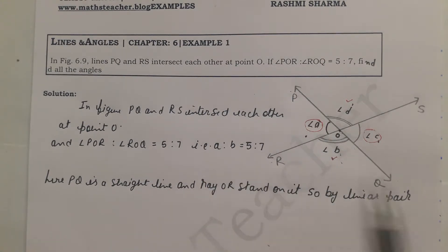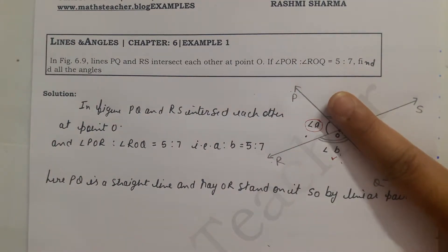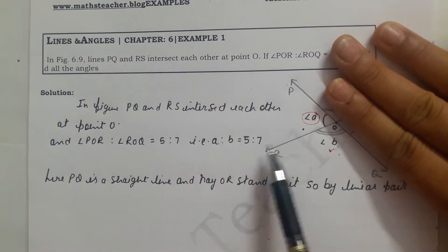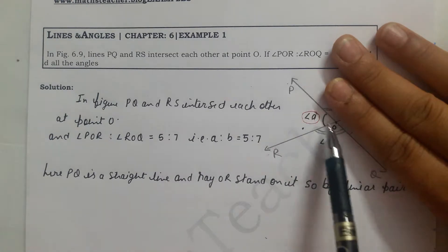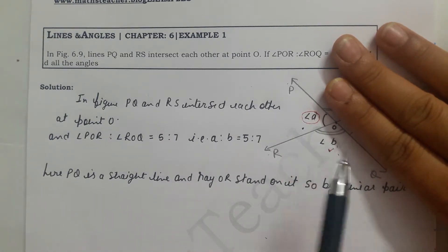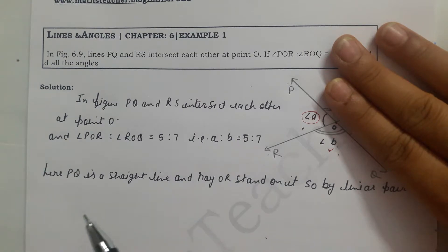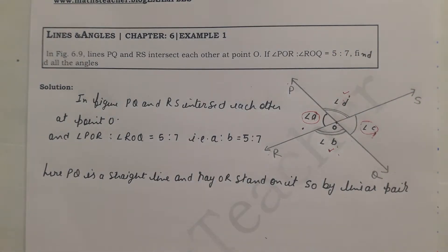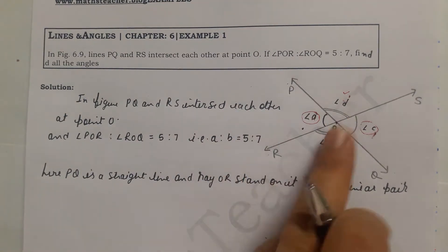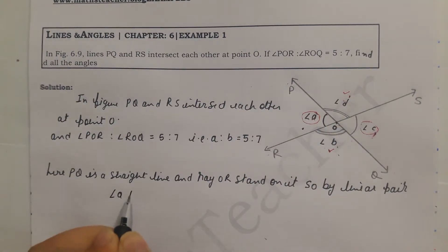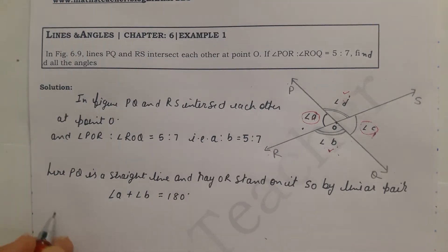Since A and B together form a straight line, the ray OR stands on PQ. By the linear pair property, angle A plus angle B equals 180 degrees. We know both the ratio and the total, so we can easily find the individual angles using the formula: angle = (ratio part / sum of ratios) × 180 degrees.